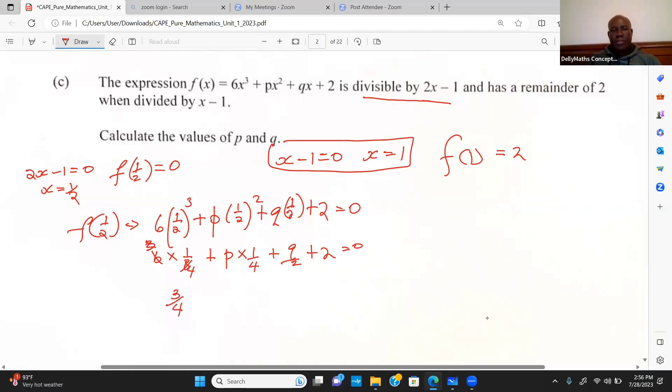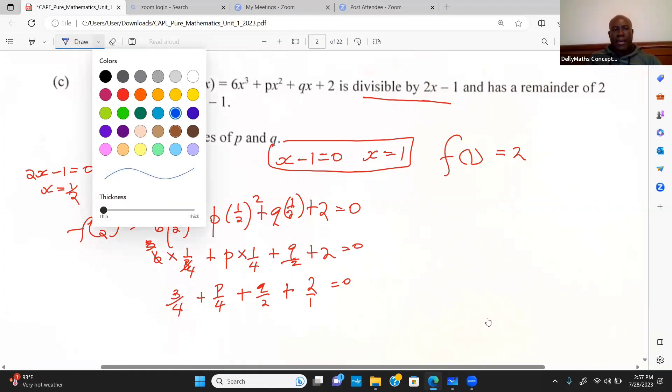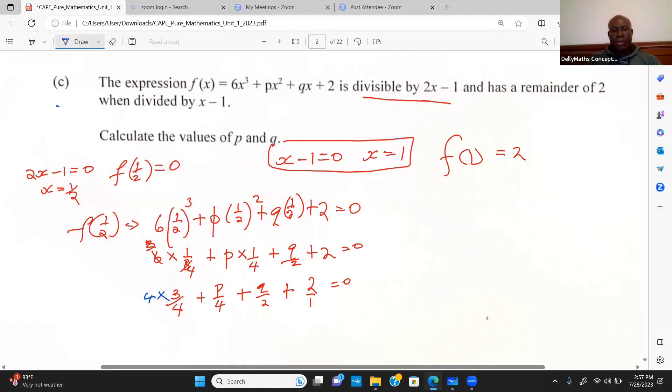I'm writing 3 fourths plus p over 4 plus q over 2 and this is plus 2 over 1. All of this is equal to 0. I want to get rid of the fraction, so I'm going to multiply throughout by 4. I'm going to multiply everything by 4 so as to not have any fraction.